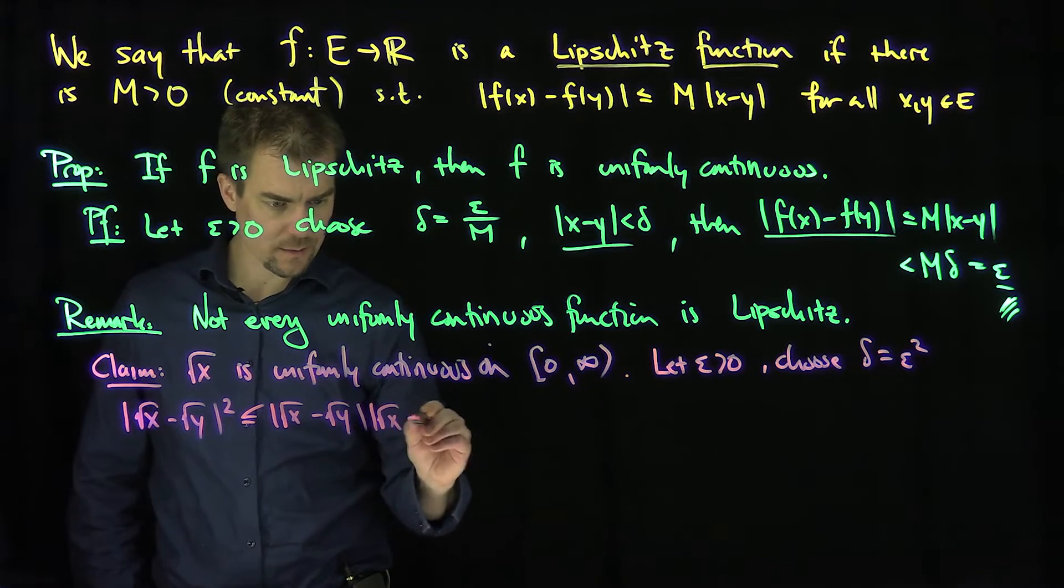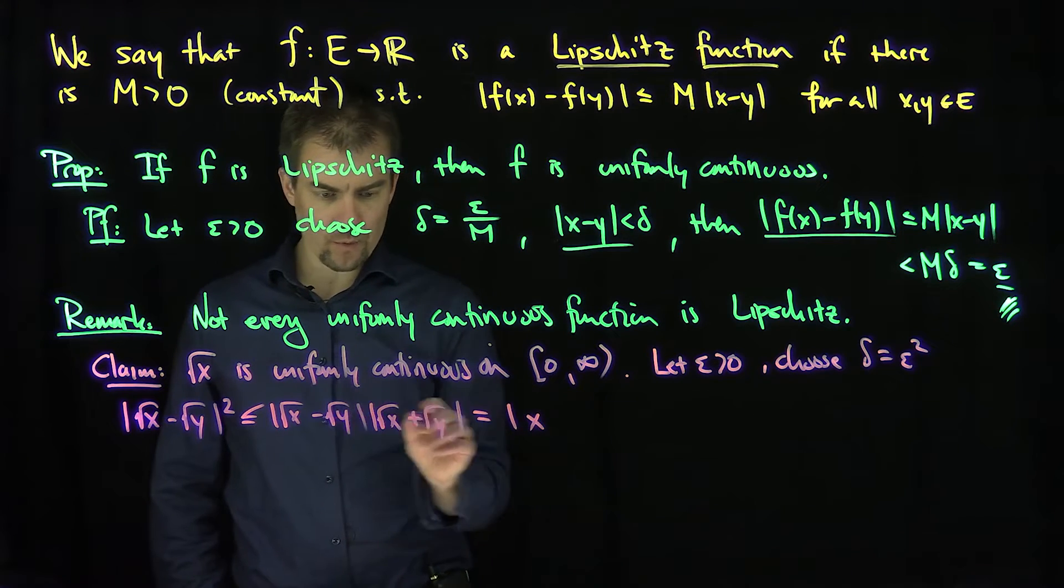I can make this bigger by replacing this with √x + √y. That only makes it bigger since these are non-negative quantities. By completing the square, combining these terms, I'll have √x·√x, which gives x, and √y·√y, which gives -y, and the cross terms cancel. We know that |x - y| is less than delta, which equals epsilon squared.